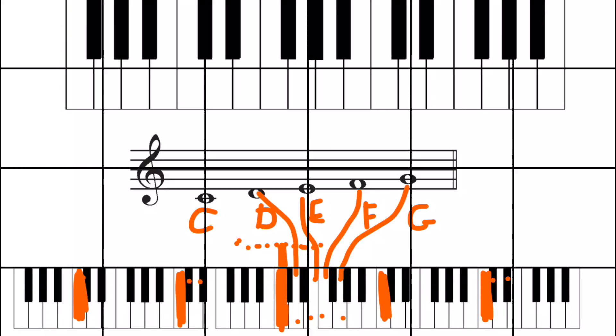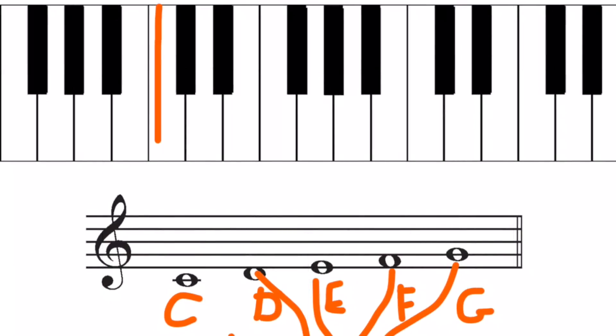So if we look on our bigger keyboard, C is the note on the left of the two black notes. D.